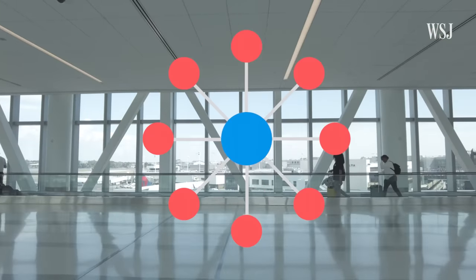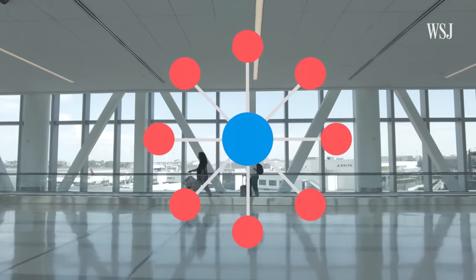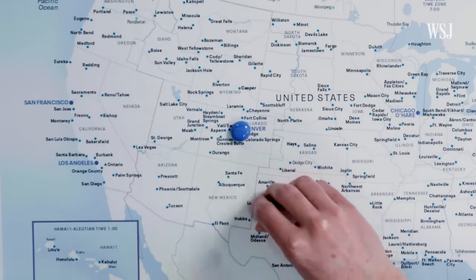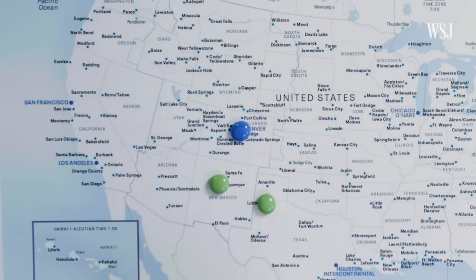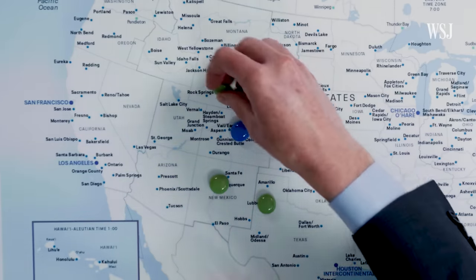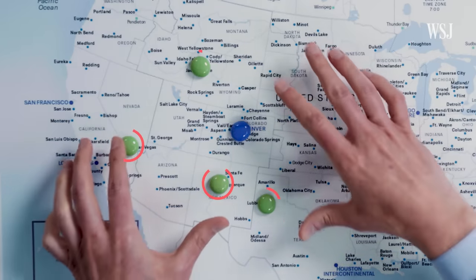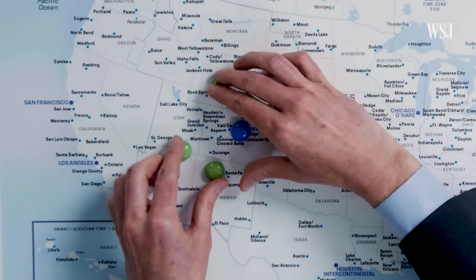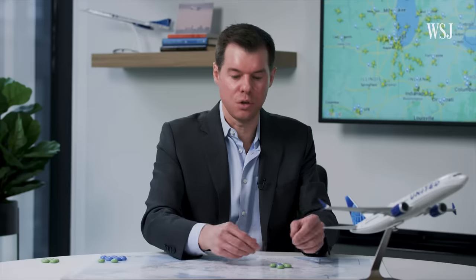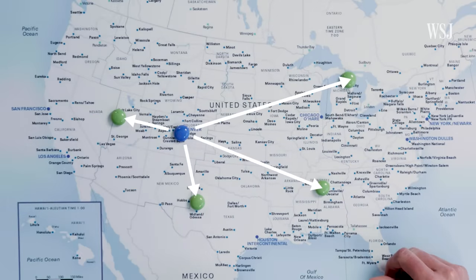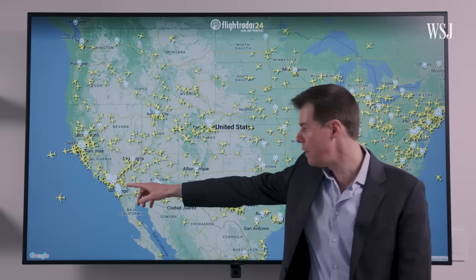There are two main network structures: hub-and-spoke, and point-to-point. United and other legacy airlines like Delta and American use the hub-and-spoke model. The way it works: you have Denver as a hub, with flights coming in from spoke cities like Lubbock, Albuquerque, Jackson Hole, and Las Vegas. The spoke cities all fly into the hub, passengers then change airplanes, and those flights disperse to different cities across the country.